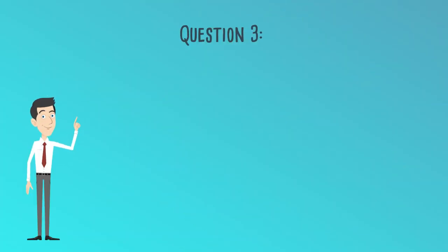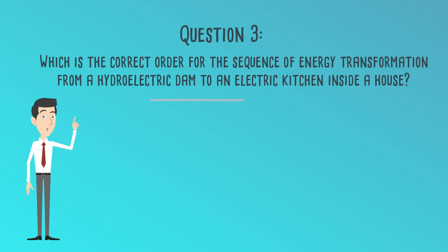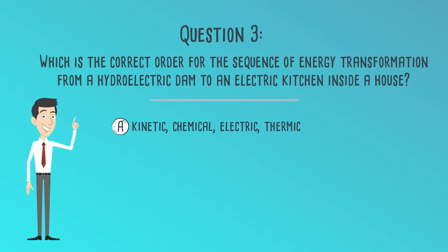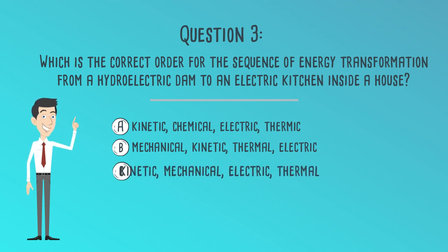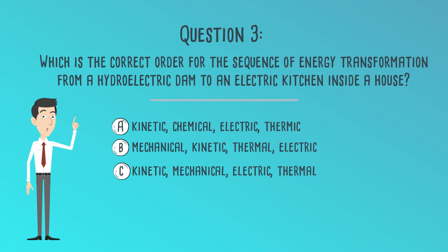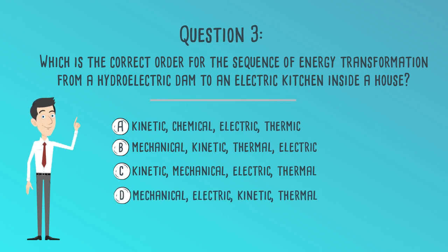Question 3. Which is the correct order for the sequence of energy transformation from a hydroelectric dam to an electric kitchen inside a house? A. Kinetic, chemical, electric, thermic. B. Mechanical, kinetic, thermal, electric. C. Kinetic, mechanical, electric, thermal. Or D. Mechanical, electric, kinetic, thermal.